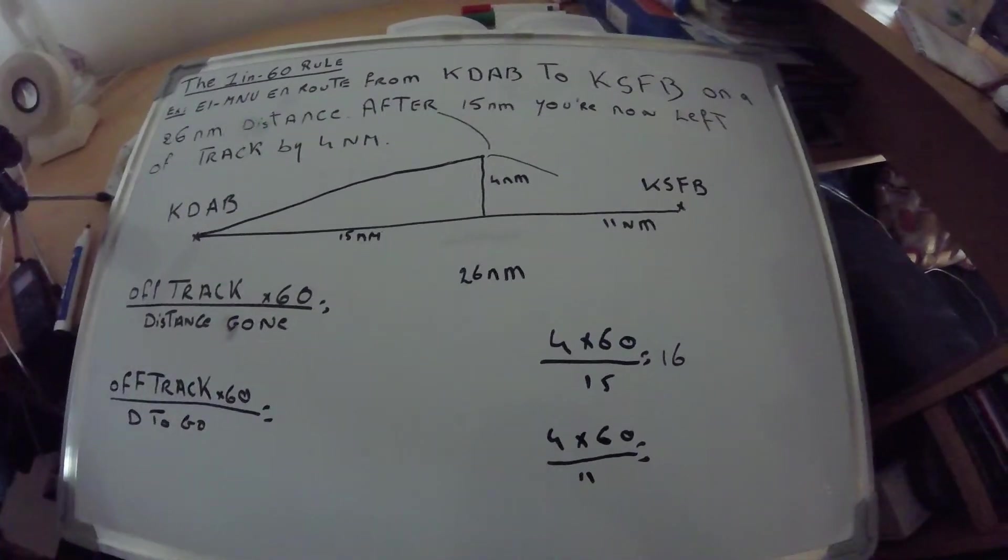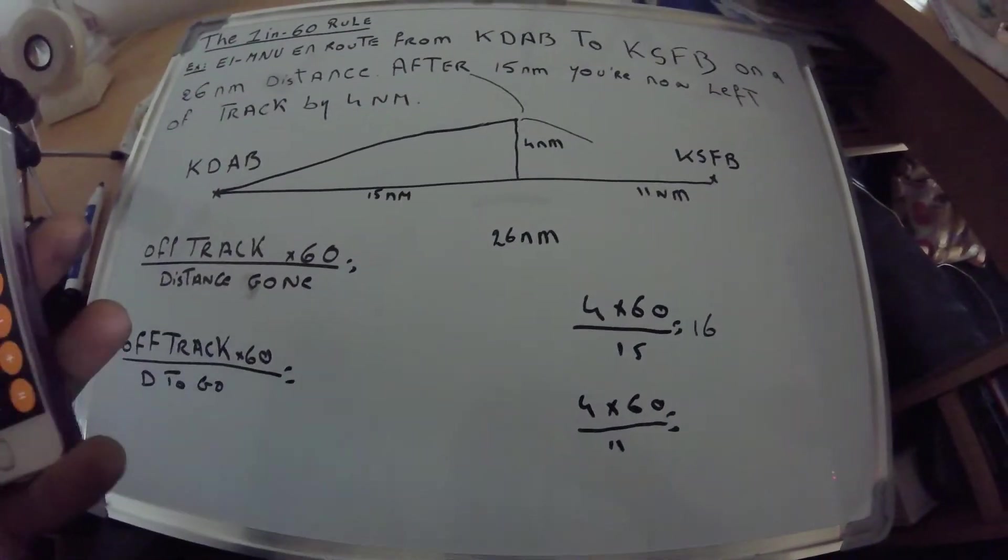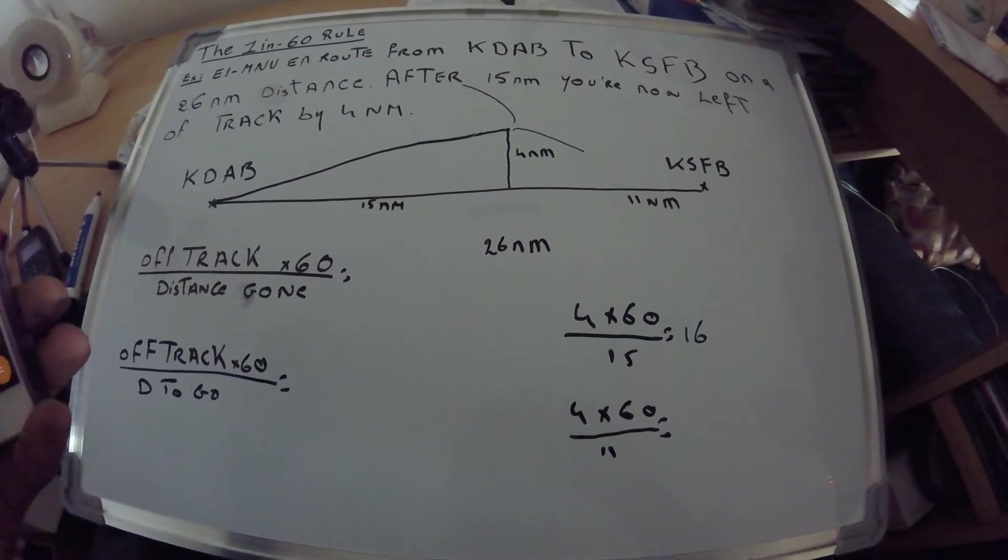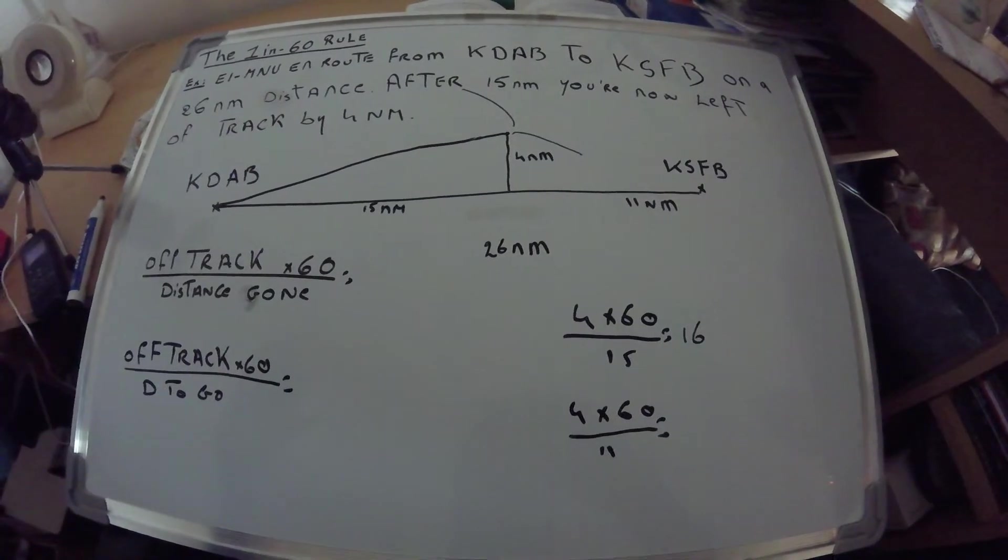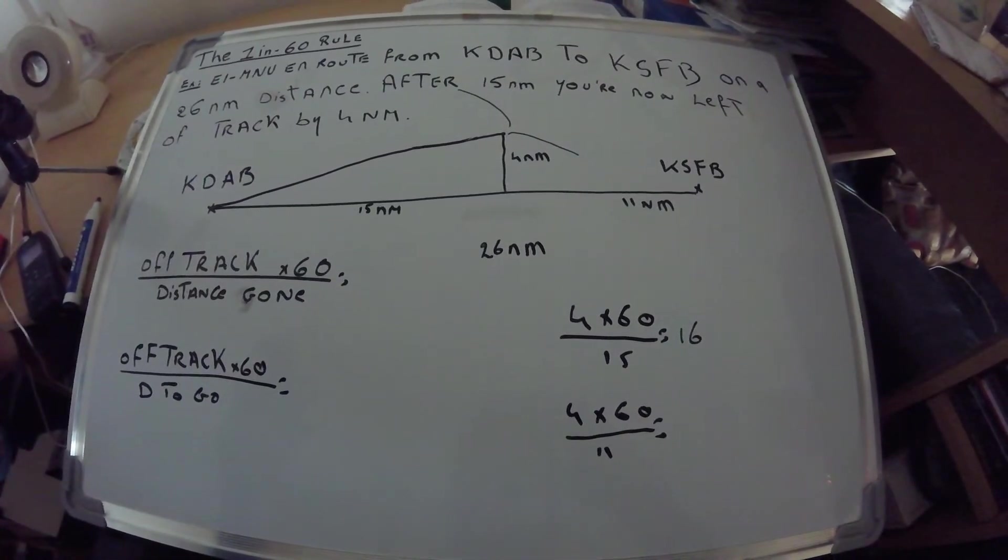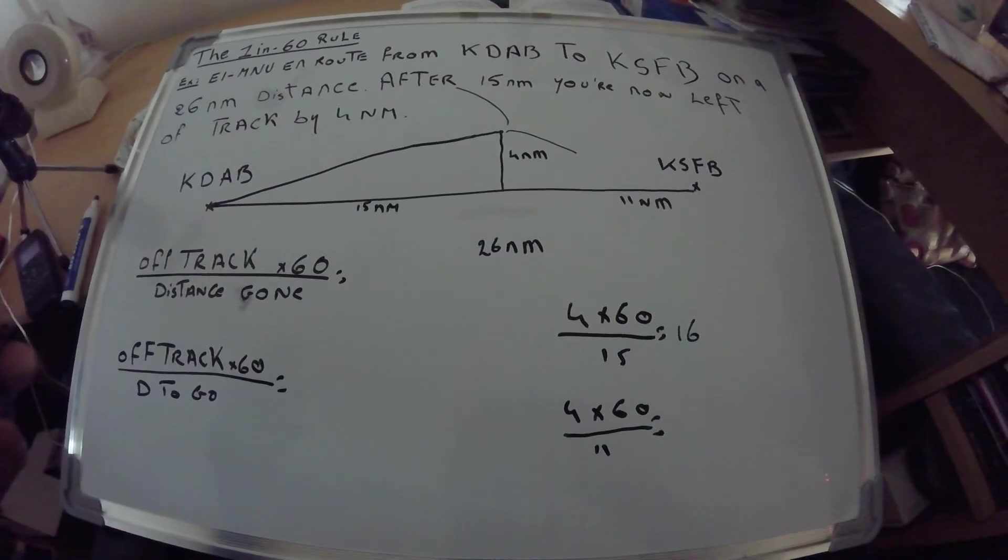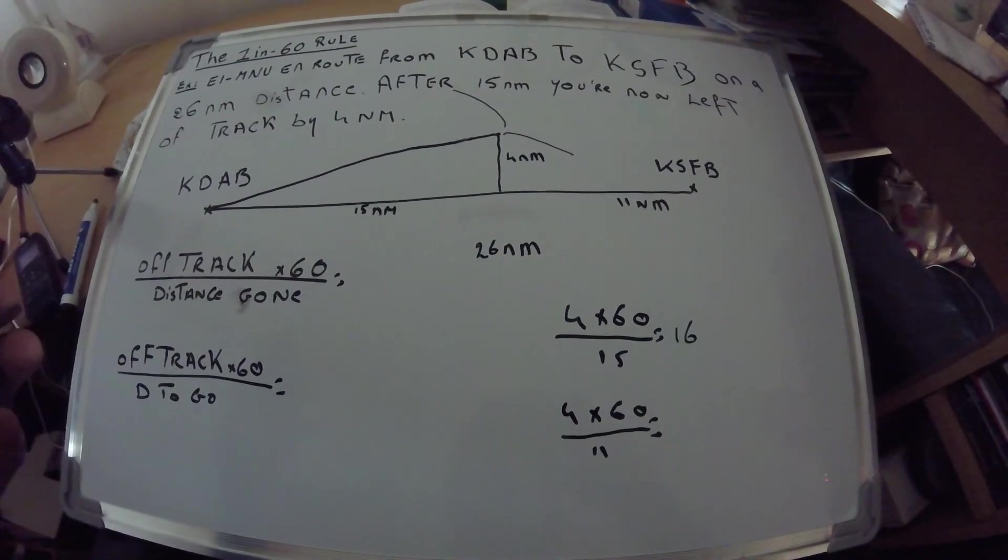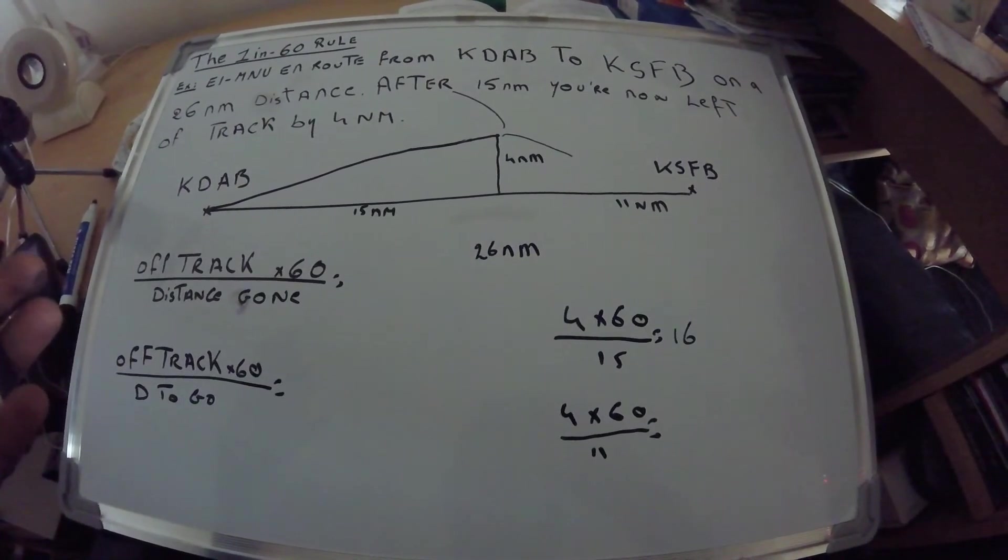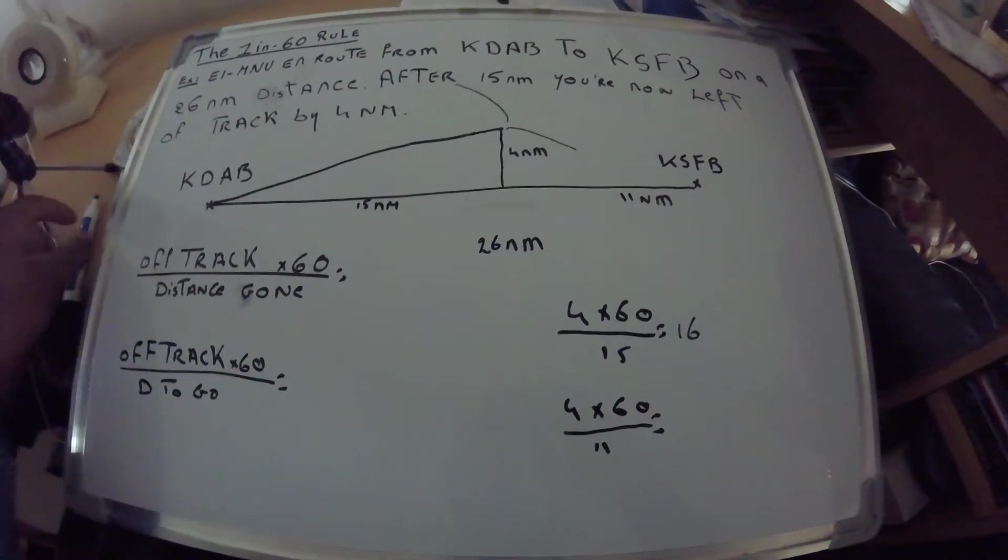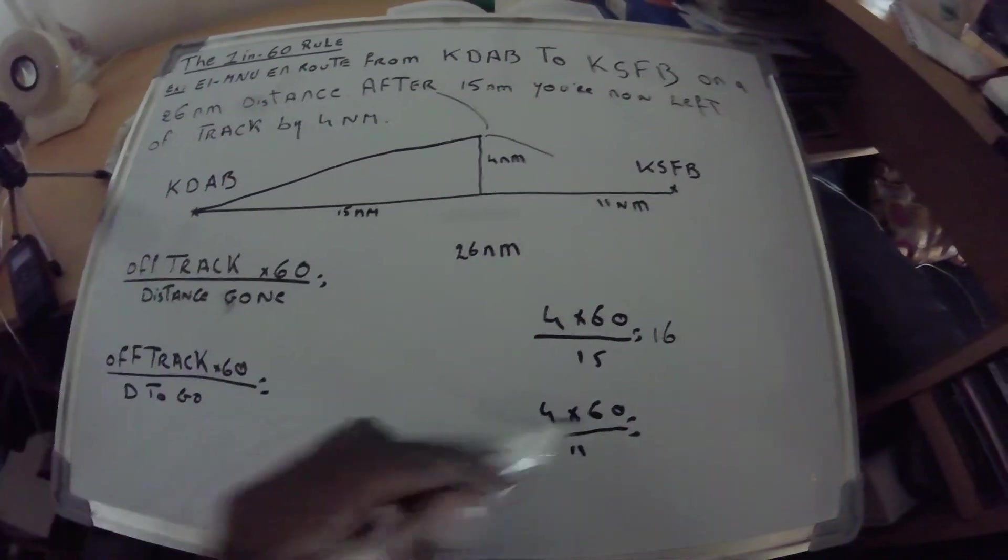Then again, we're gonna have 4 multiplied by 60 divided by 11, and I got 21.81, so I'm just gonna put 22.